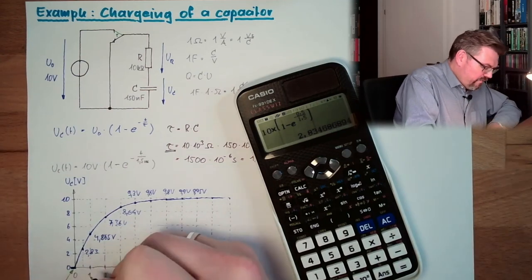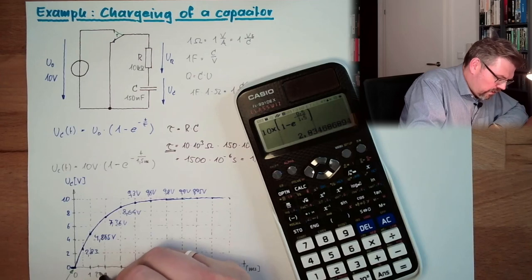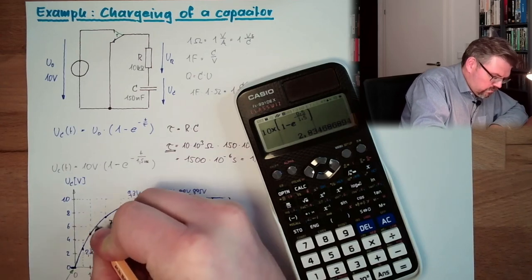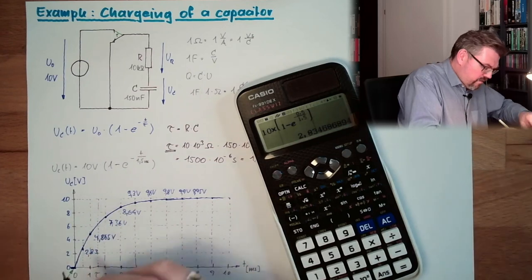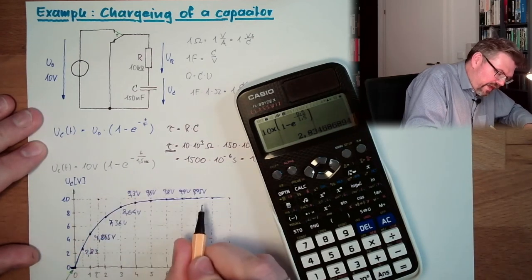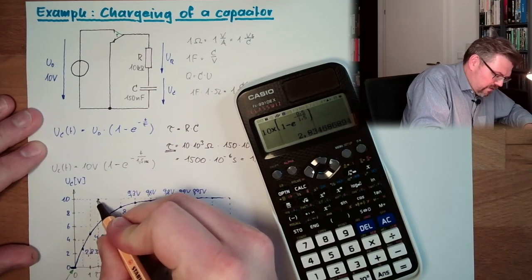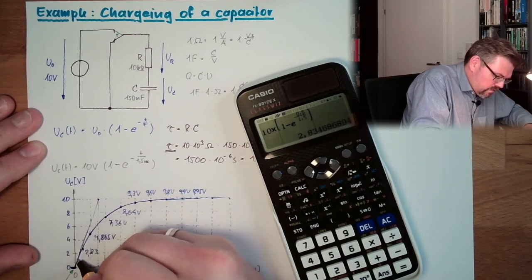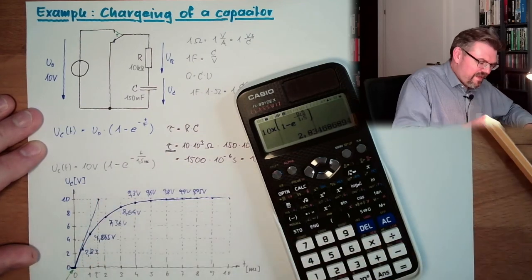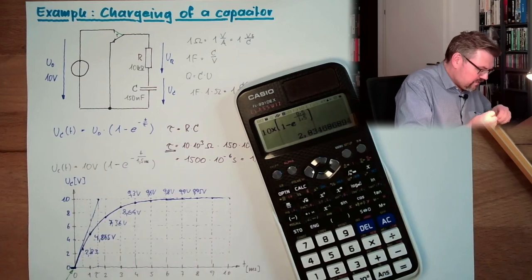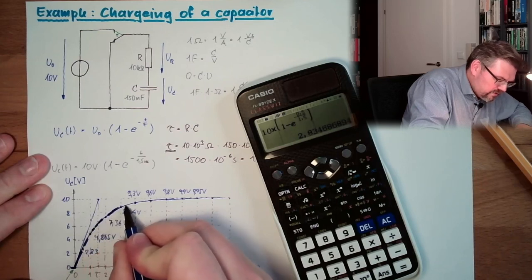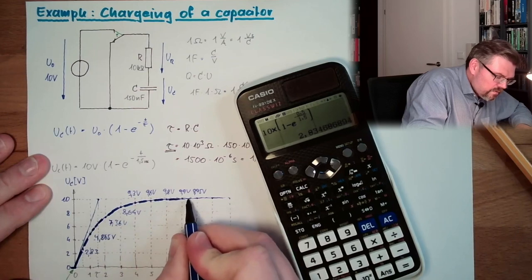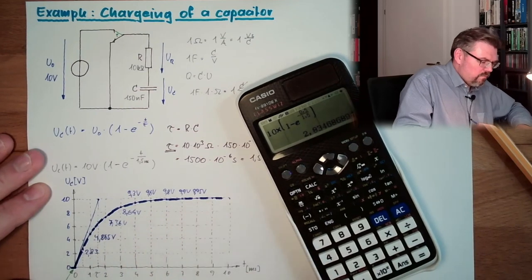Now that we calculated this, we can have a look. Here we have tau on the time axis. I said that if we draw a tangent line from the origin up to tau, it meets the final value — and indeed it seems to be really the tangent to this curve. So this is how it looks, and it's not a big surprise that this is correct.